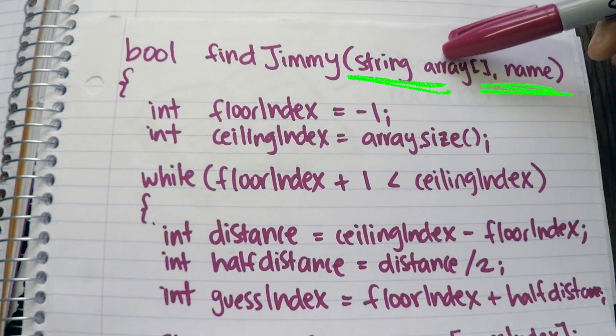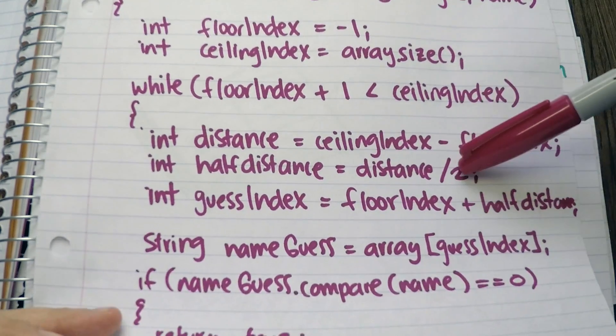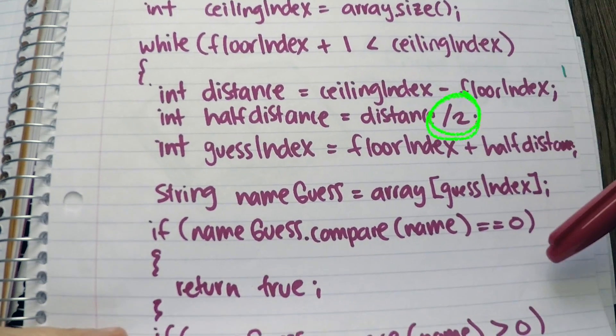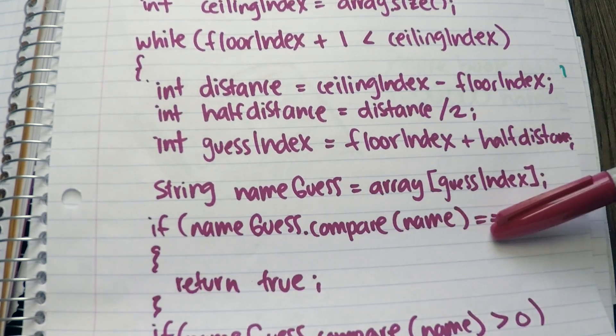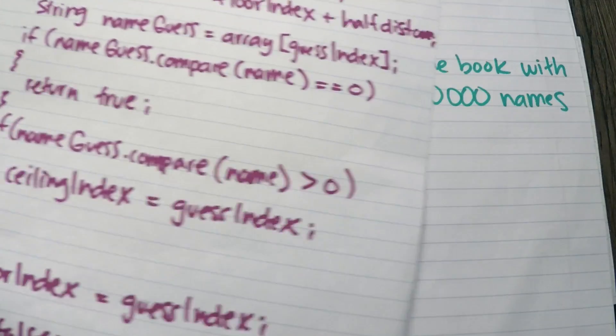This function takes an array with all the names and the name that I'm looking for. In the while loop, we cut the array in half, check the name in the middle, and if it does not match our name, we determine which half we continue to search in. We repeat until we find our name.